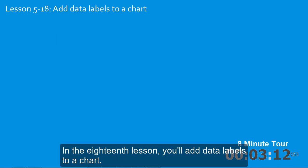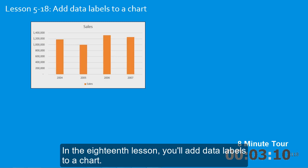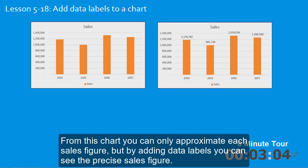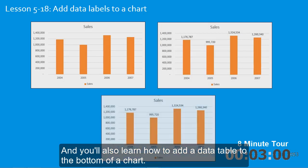In the eighteenth lesson you'll add data labels to a chart. From this chart you can only approximate each sales figure, but by adding data labels you can see the precise sales figure. And you'll also learn how to add a data table to the bottom of a chart.